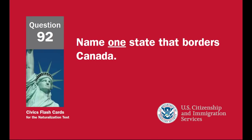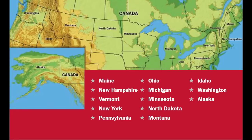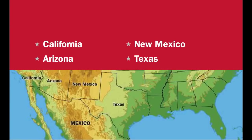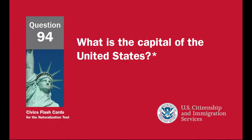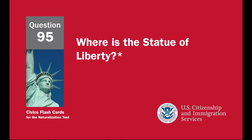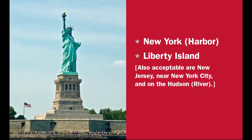Name one state that borders Canada: Maine, New Hampshire, Vermont, New York, Pennsylvania, Ohio, Michigan, Minnesota, North Dakota, Montana, Idaho, Washington, Alaska. Name one state that borders Mexico: California, Arizona, New Mexico, Texas. What is the capital of the United States? Washington, D.C. Where is the Statue of Liberty? New York Harbor, Liberty Island — also acceptable are New Jersey, near New York City, and on the Hudson River.